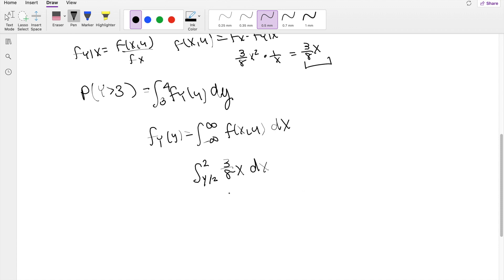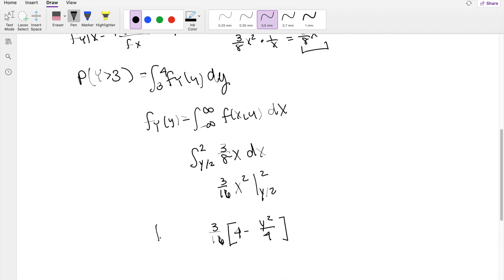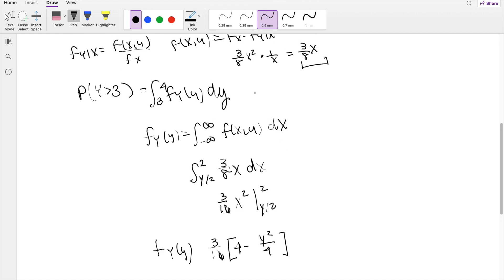Alright, so then just solving this out, when you solve for x squared, you get 3 over 16 integrating x from y over 2 to 2. This equals 3 over 16, throwing that outside, you get 4 minus y squared over 4. So this is equal to the marginal distribution of y. So we actually have everything we need to find this thing right here.